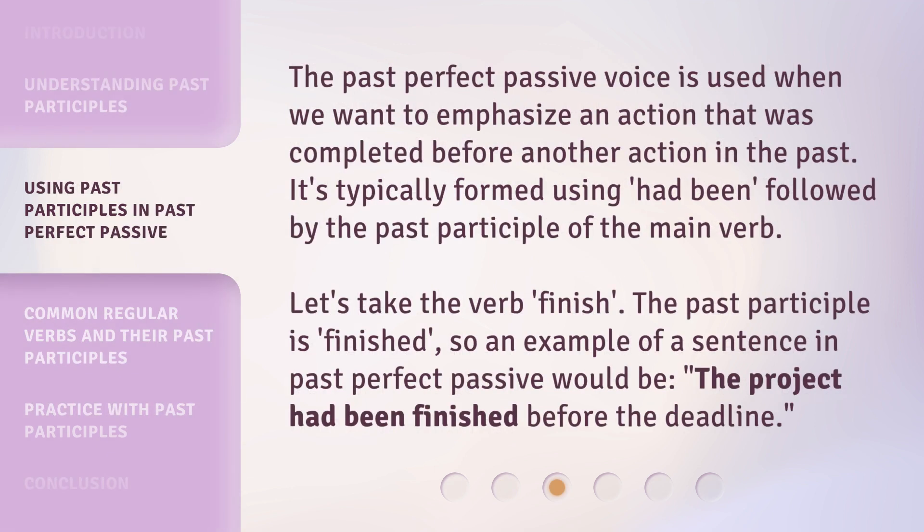The past perfect passive voice is used when we want to emphasize an action that was completed before another action in the past. It's typically formed using "had been" followed by the past participle of the main verb. Let's take the verb "finish" — the past participle is "finished". So an example of a sentence in the past perfect passive would be: "The project had been finished before the deadline."